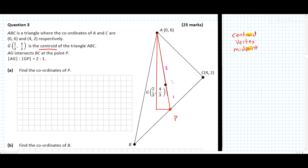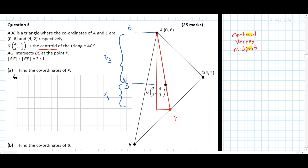So how far down have we actually gone? The y-coordinate of A was 6, and now at G the y-coordinate is 4/3. So 6 minus 4/3 equals 14/3 — that drop of 14/3 represents two-thirds of the total drop. We still have another one-third of the drop to go, and one-third will be 7/3.